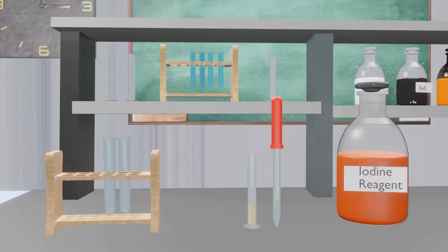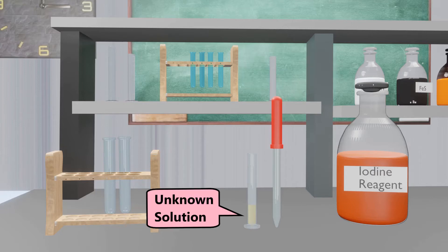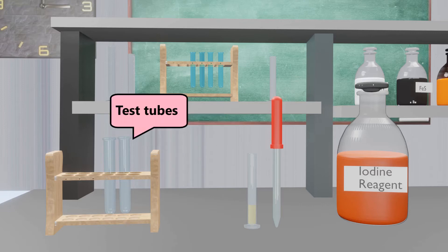For the iodine test, materials required are: iodine reagent, dropper, unknown solution, test tube rack, and test tubes.